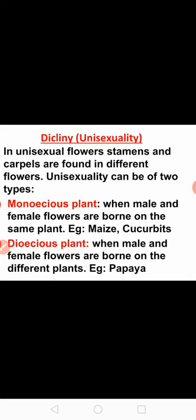Unisexuality can be of two types: monoecious plant and dioecious plant. When both male and female flowers are born on the same plant, the plant is called as monoecious. Whereas dioecious plant means when male and female flowers are born on different plants, it is called as dioecious.